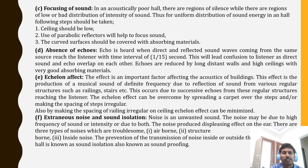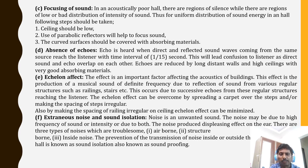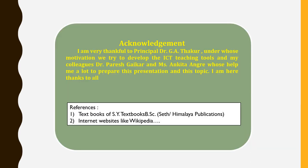Last factor: extraneous noise and sound isolation. Noise is an unwanted sound that may be due to high frequency, intensity, or bone conduction. There are three types of troublesome noise: air-borne, structure-borne, and inside noise. The prevention of transmission of noise inside and outside the hall is known as sound isolation or sound proofing. I am thankful to Principal J.A. Thakur sir, under whose motivation we developed this ICT teaching tool, and to colleagues Dr. Parish Gajkar and Ms. Akita Angrae who helped prepare this presentation. References include the FYBC textbook and diagrams from the internet.